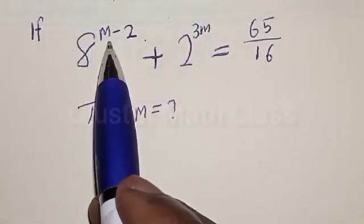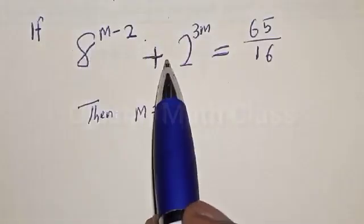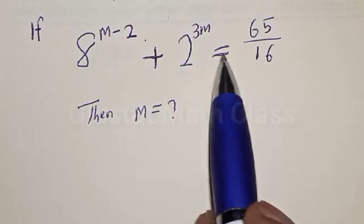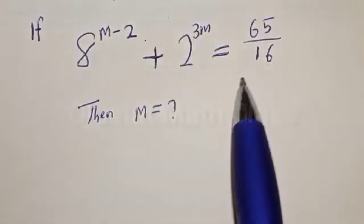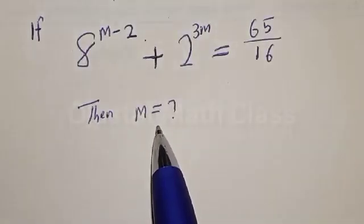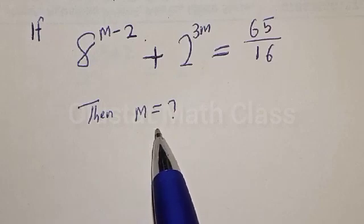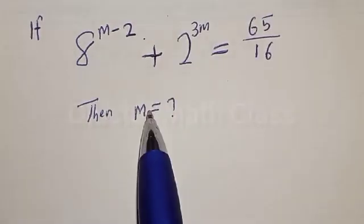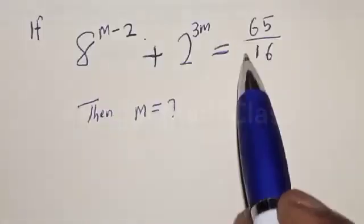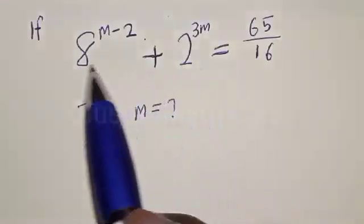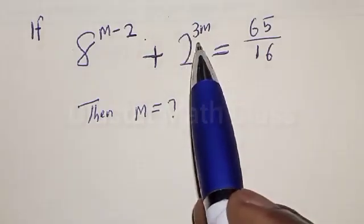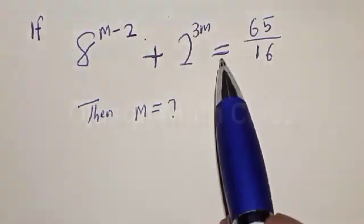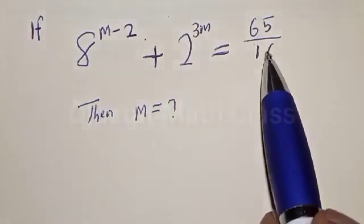If 8 raised to power m minus 2 plus 2 raised to power 3m is equal to 65 divided by 16, what is the value of m? Hi everyone, welcome to my class. In today's class, we quickly want to find the value of m from this given exponential equation: 8 raised to power m minus 2 plus 2 raised to power 3m is equal to 65 divided by 16.